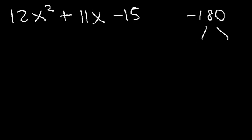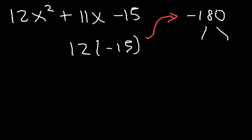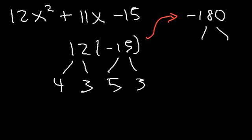Now what two numbers multiply to negative 180 but add to 11? This is a large number, so it helps to find the factors of 12 and 15. 15 factors as 5 and 3; 12 factors as 4 and 3, and 4 can be broken into 2 and 2.